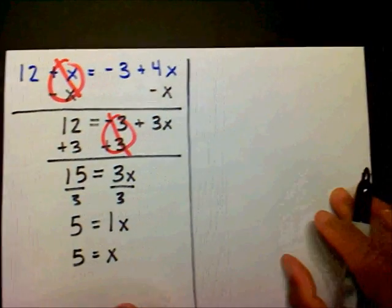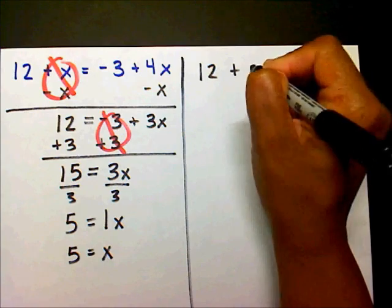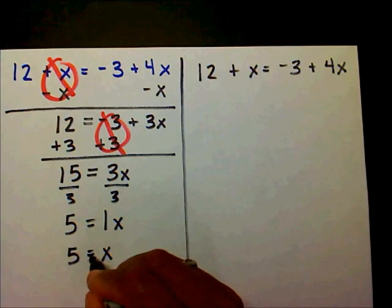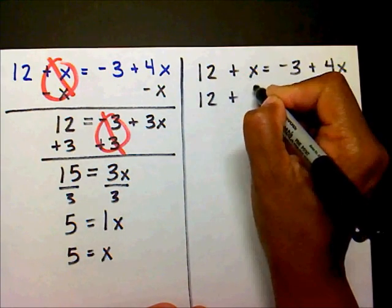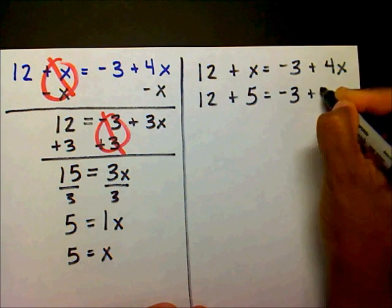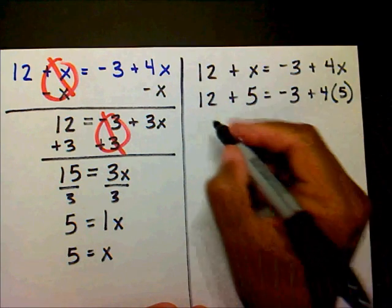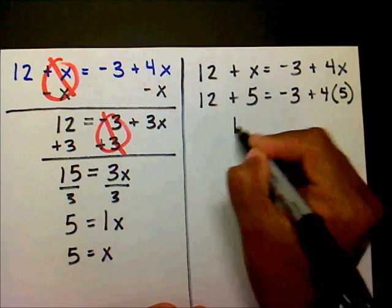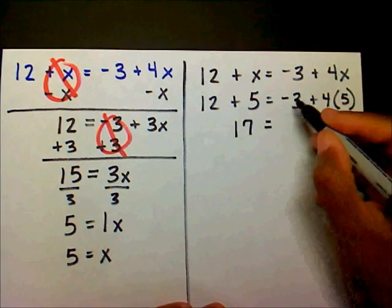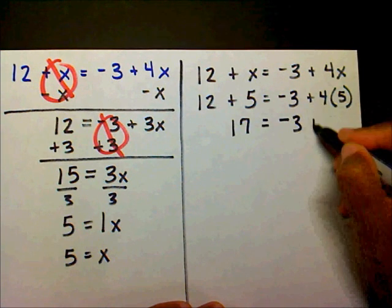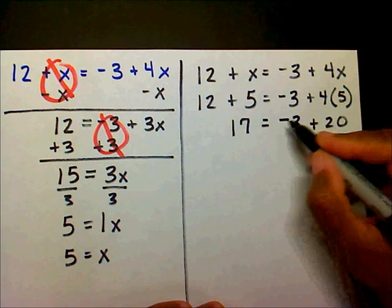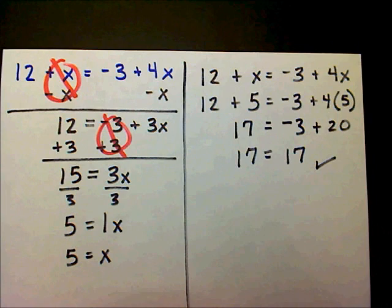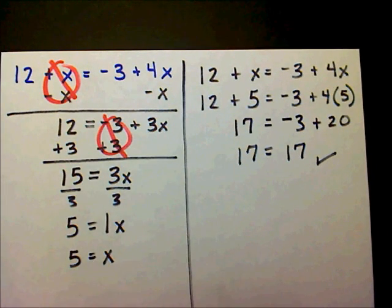I'm going to check it to make sure my work is correct. The equation is 12 plus x equals negative 3 plus 4x. I'll substitute 5 in for x: 12 plus 5 equals negative 3 plus 4 times 5. The left side gives 17. On the right, 4 times 5 is 20, and 20 plus negative 3 is 17. I have 17 on both sides, so x equals 5 is confirmed as the solution.